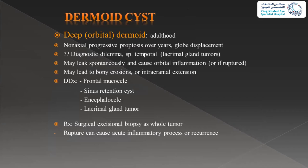The orbital or deep dermoid usually presents during adolescence or adulthood, with a vague presentation that can be a diagnostic dilemma. It gives a non-axial progressive proptosis over years with globe displacement or dystopia. If it's close to the temporal area, we can confuse it with lacrimal gland tumors. It may leak spontaneously or after head trauma, causing orbital inflammation that mimics orbital cellulitis. When you image the patient, you can confirm no sinusitis and identify it radiologically as an orbital dermoid.